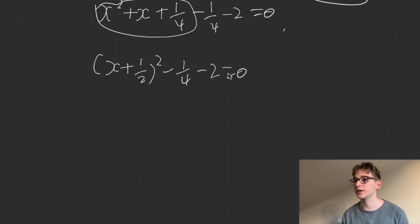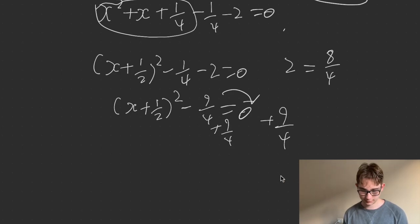So then that is going to be minus 1 quarter minus 2 equals 0. Then you can simplify this, because we know 2 is just 8 on 4. So you can get x plus 1 half squared minus 9 on 4 equals 0. And then you could solve for x by adding 9 on 4 on both sides, which you don't really need to worry about right now.